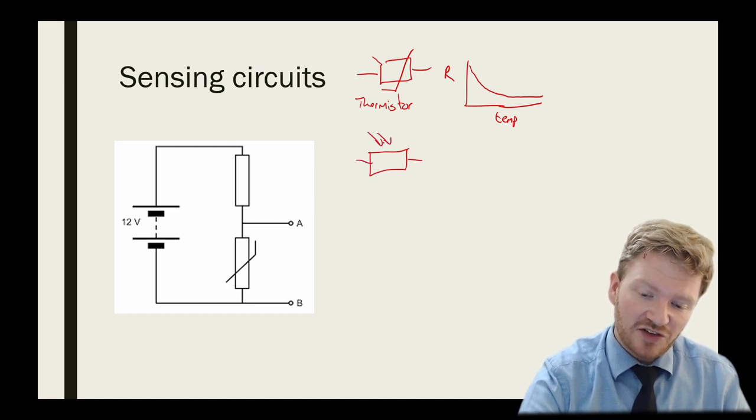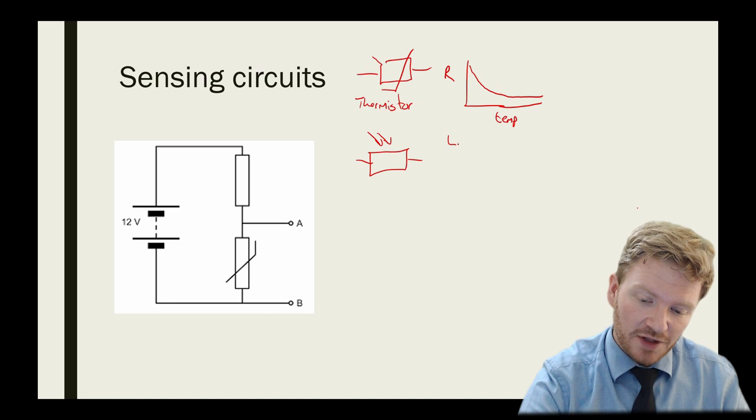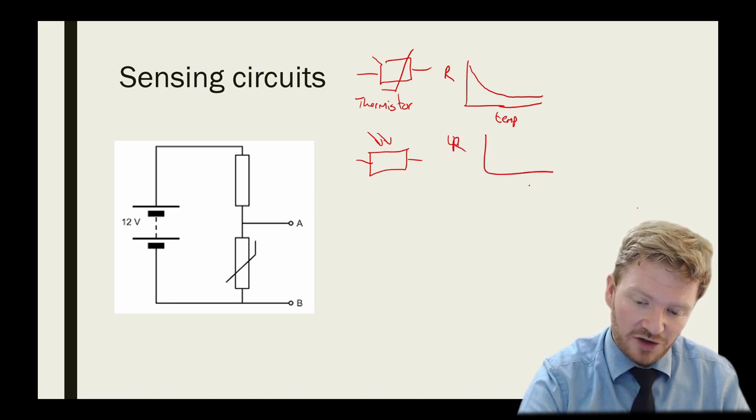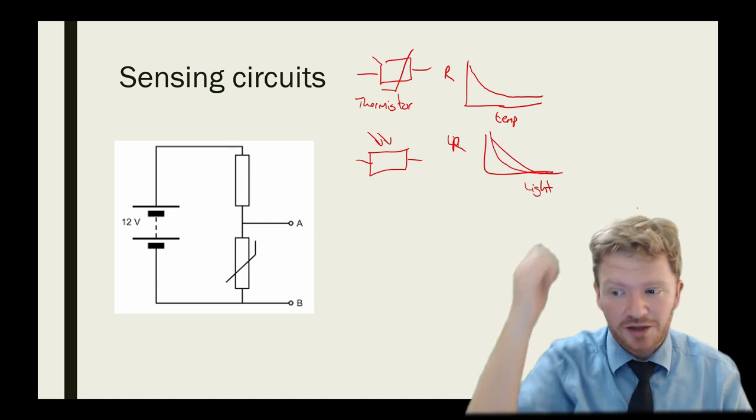Another device you're going to be looking at is a light-dependent resistor. What this does is it senses light levels. And again, it has a similar curve to a thermistor. What happens is, as light levels go up, the resistance of it drops.